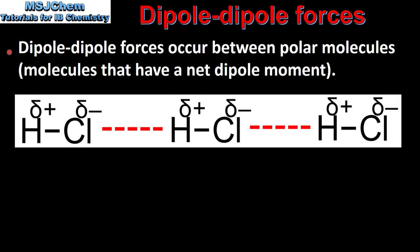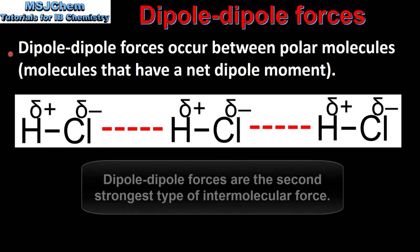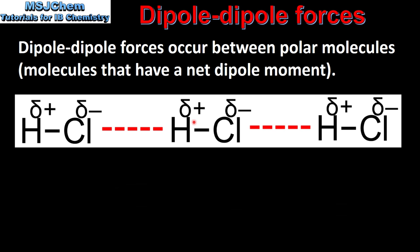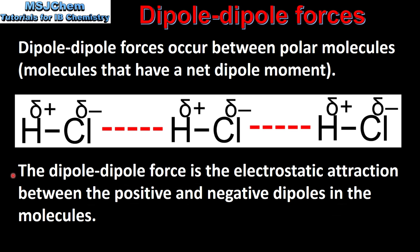Next we look at dipole-dipole forces. Dipole-dipole forces occur between polar molecules — molecules that have a net dipole moment. The example here is hydrogen chloride. Hydrogen chloride is a polar molecule because of the difference in electronegativity between hydrogen and chlorine. This gives the chlorine atom a negative dipole and the hydrogen atom a positive dipole. The dipole-dipole force is the electrostatic attraction between the positive and negative dipoles in the molecules.